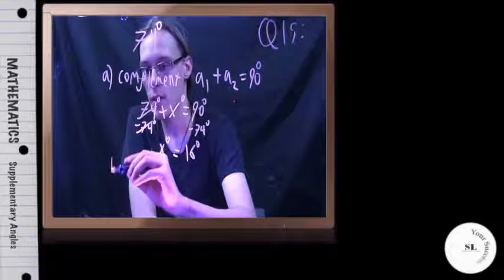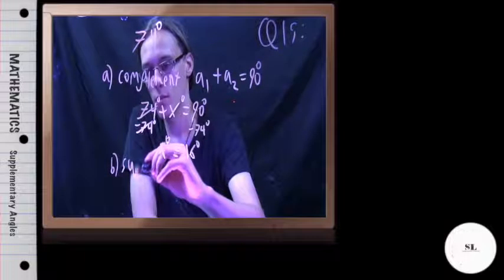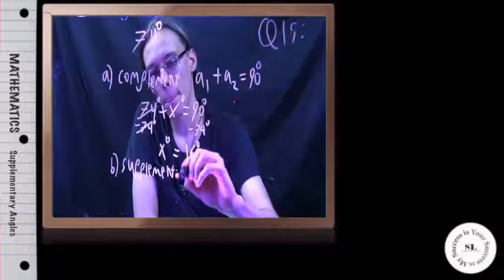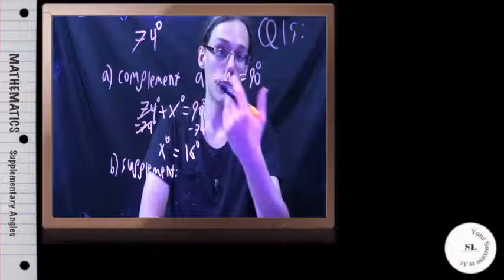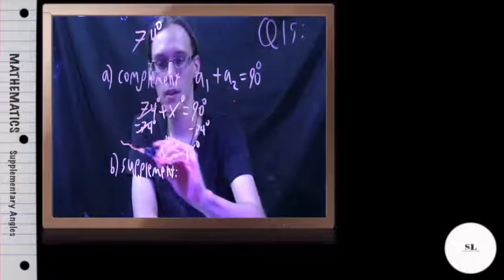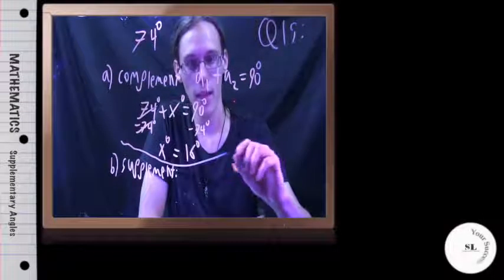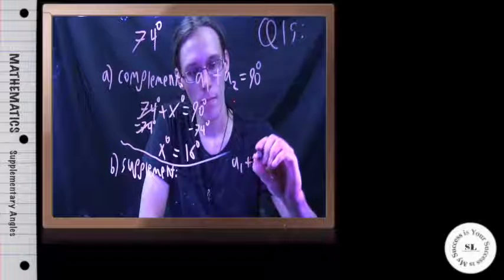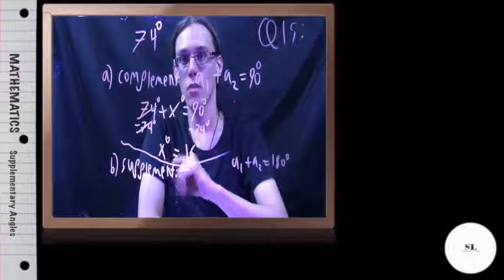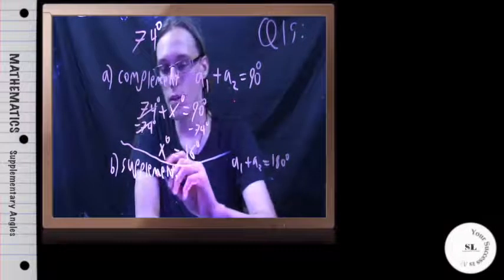Now, we also want the supplementary angle. Complementary means 90 degrees, and we can make all kinds of silly jokes. Supplementary — I don't have any jokes for you — but the angles add up to 180 degrees. So twice as complementary, if you like.